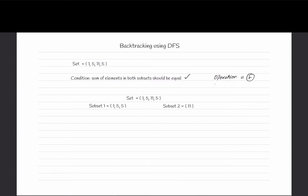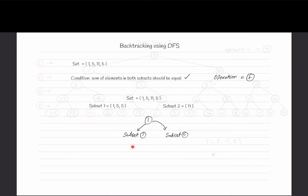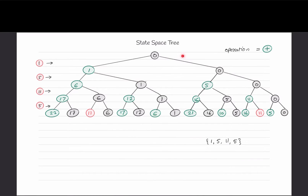From the provided set, we need to make two subsets. For each element, either we add it into subset one or we add it into subset two. So for each element we have the condition: add it or not add it. We will go with a state space tree to see how it looks.